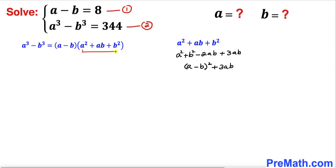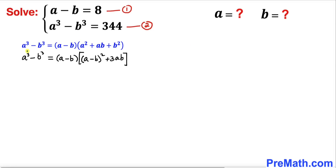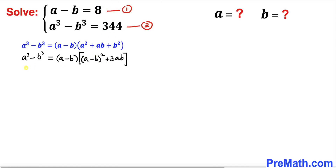So I am going to replace the whole expression with this manipulated form. Therefore our equation becomes: a cubed minus b cubed equals a minus b, times the quantity a minus b whole square plus 3ab. We can see that a cubed minus b cubed equals 344, and a minus b equals 8 from equation 1.